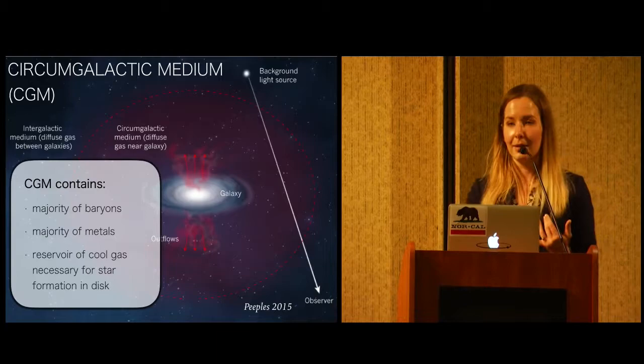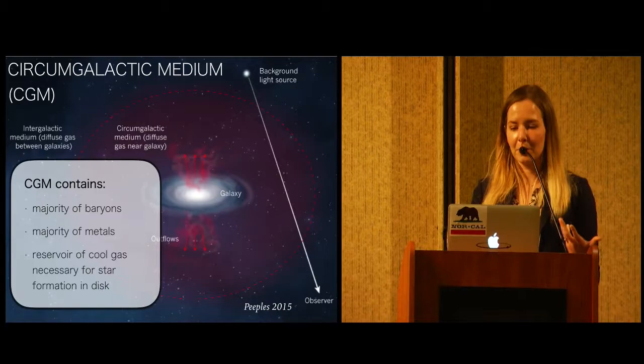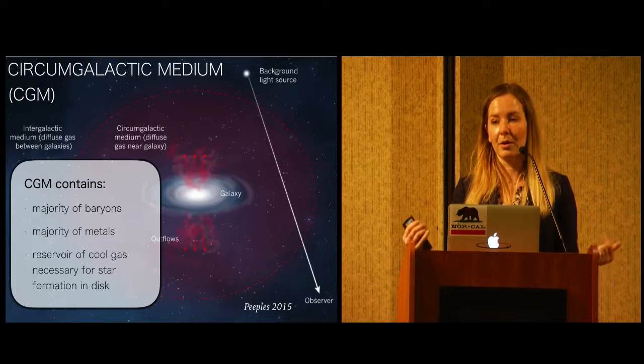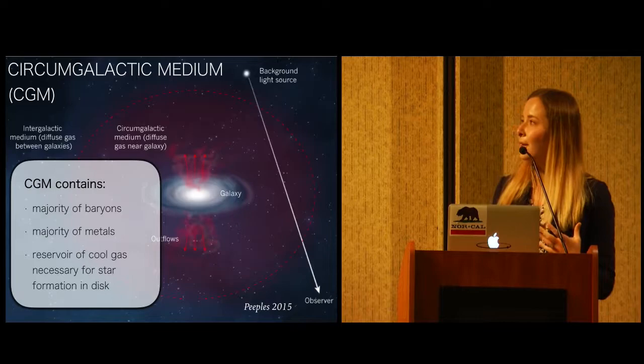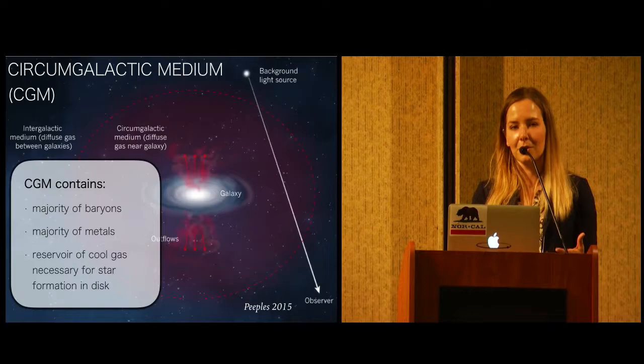The CGM also holds the majority of metals. And so even though metals are only created in stars, which primarily happen in the disk of a galaxy, galaxies retain only maybe a quarter of the metals that they create. So it gets pushed out into the CGM somehow. And finally, the CGM has a reservoir of cool gas, which is required for star formation. And it's also the medium through which cool gas from the IGM flows into the main disk galaxy. And understanding how this cool gas is accreted onto the main disk galaxy is really important for understanding galaxy evolution, for why some galaxies continue forming stars while others die out relatively early.